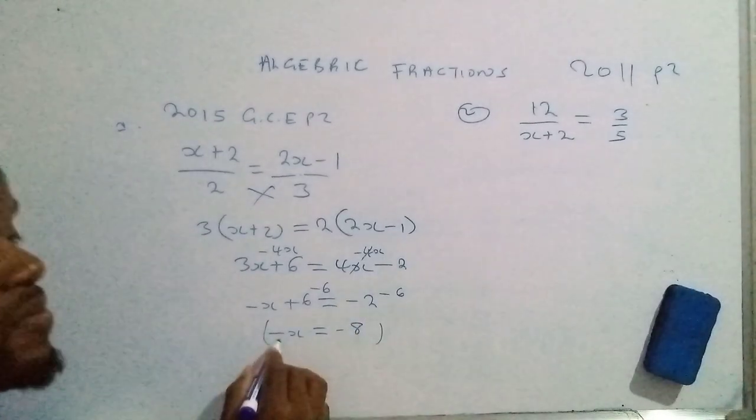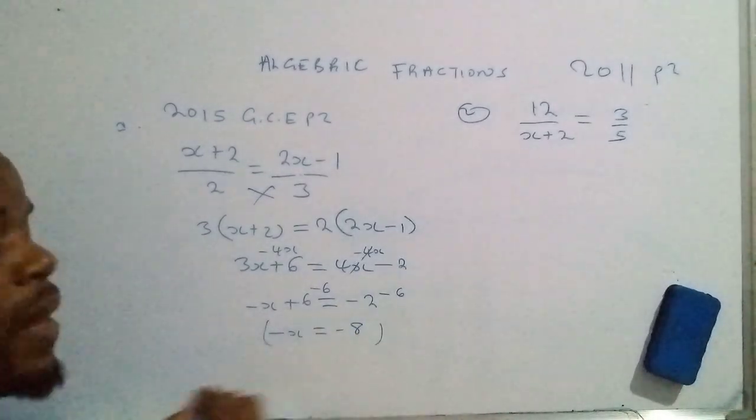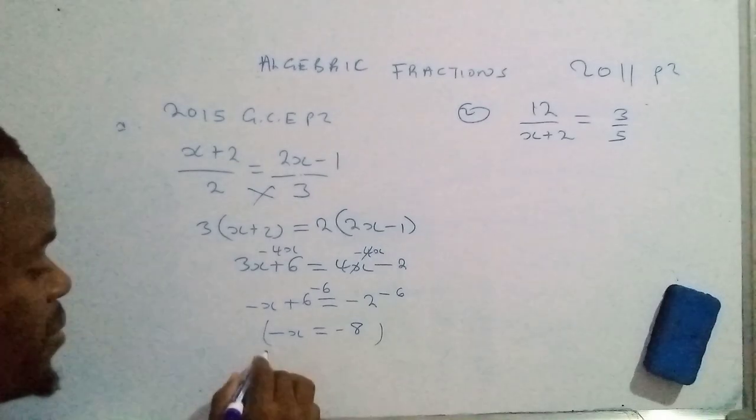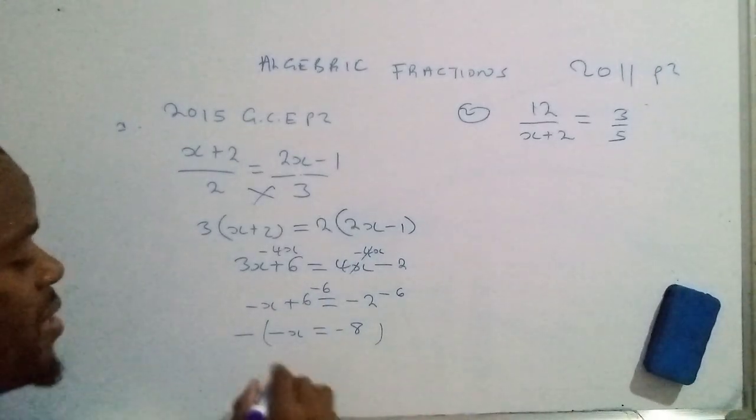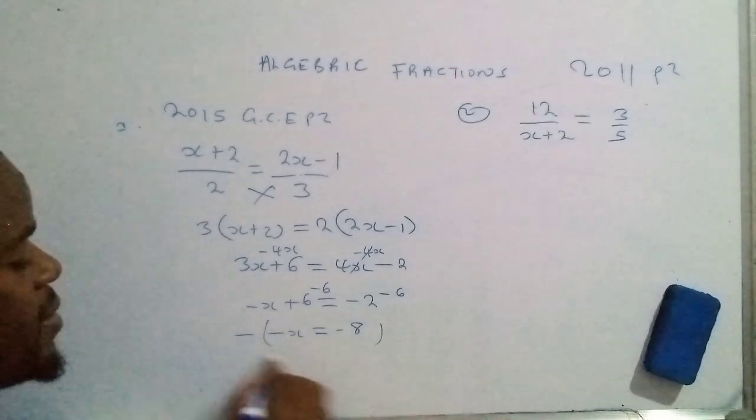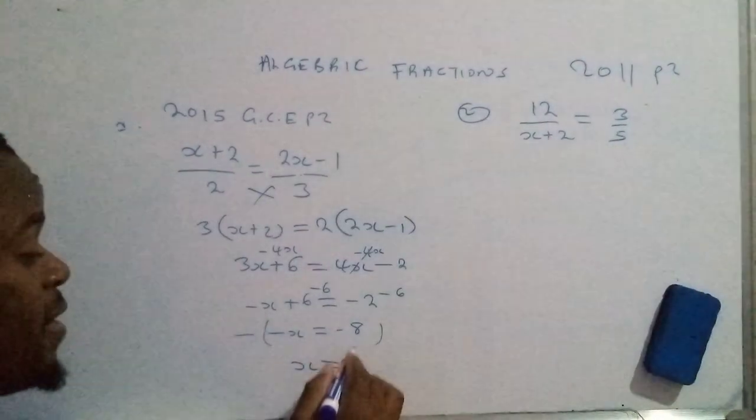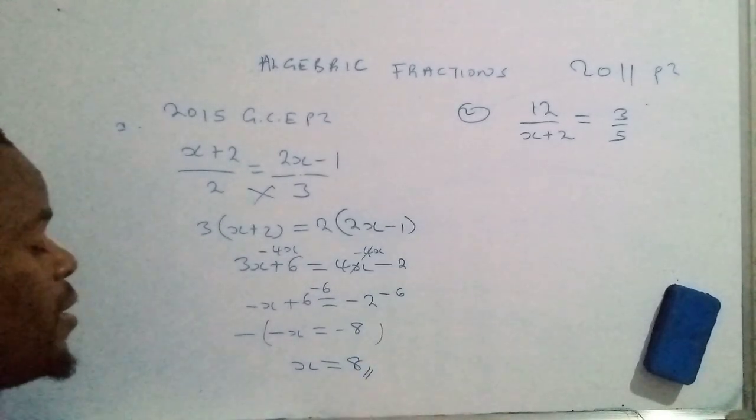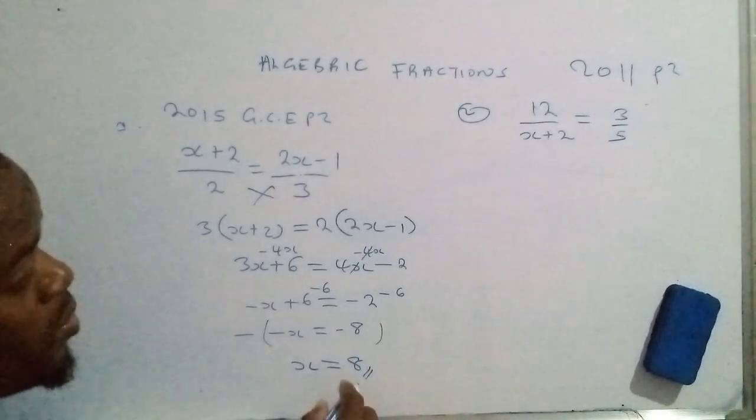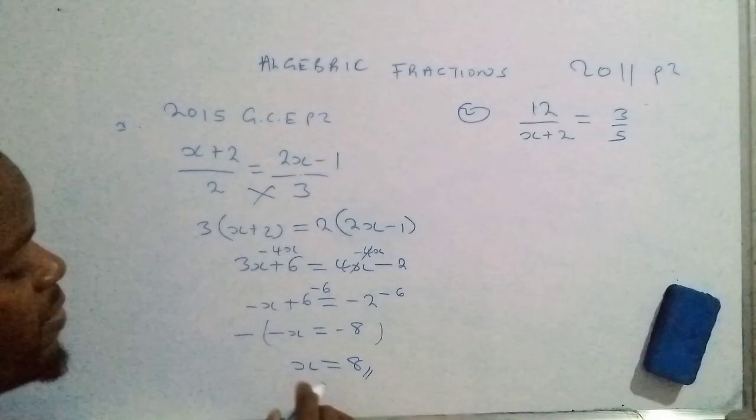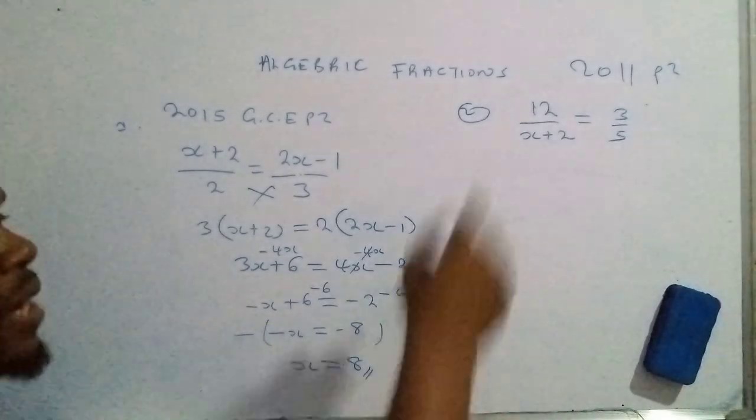So now we have to get rid of the negative sign in front of the x variable here, so we multiply both sides of the equation by the negative sign. This will give us positive x, negative negative that side, that would be 8. So the answer is positive 8. The value of x is positive 8. Let's check out this one.